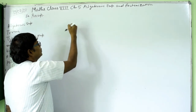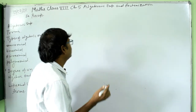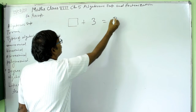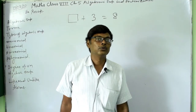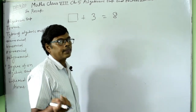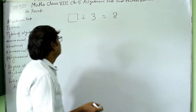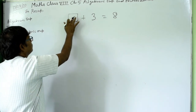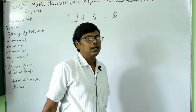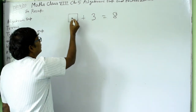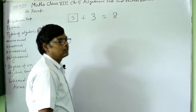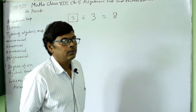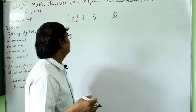For example, in lower classes you studied simple questions like: box plus 3 equals 8. You have to fill in the correct number so that this number plus 3 equals 8. The answer is 5, because 5 plus 3 is 8. That blank box is an unknown space.